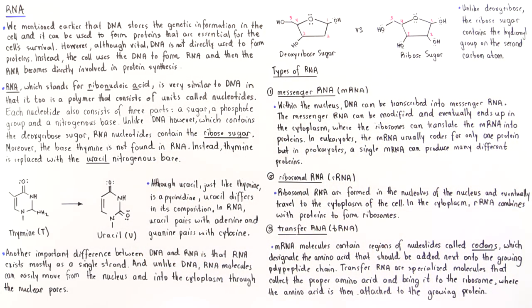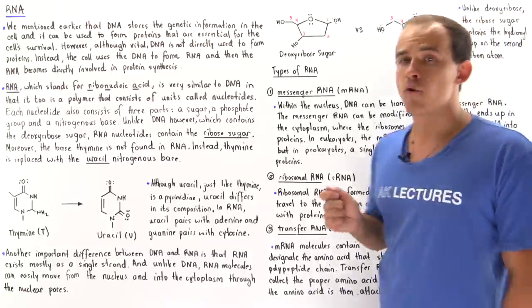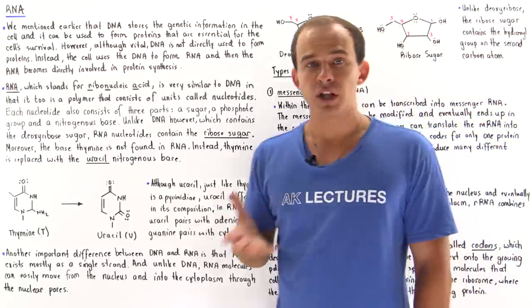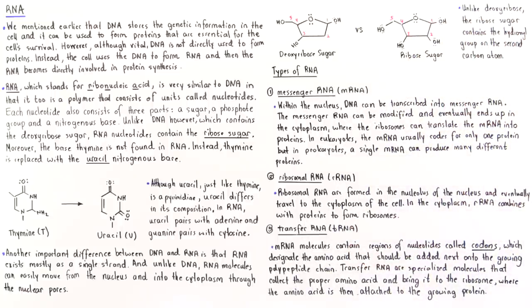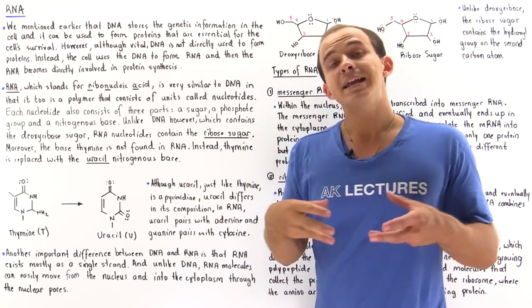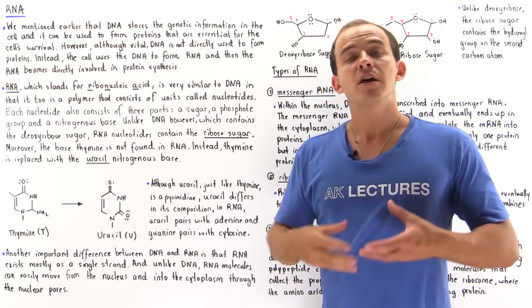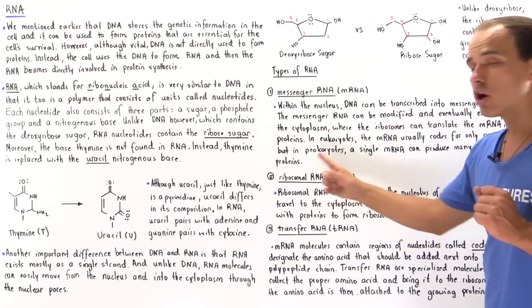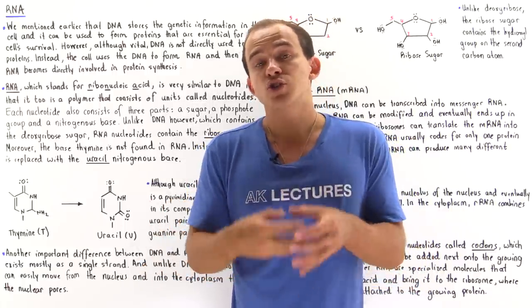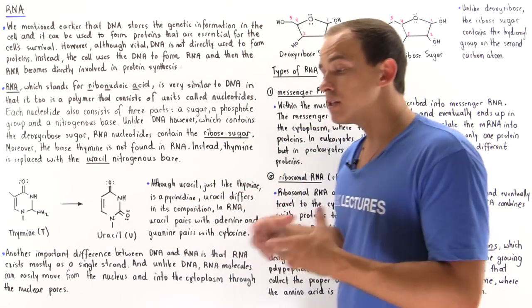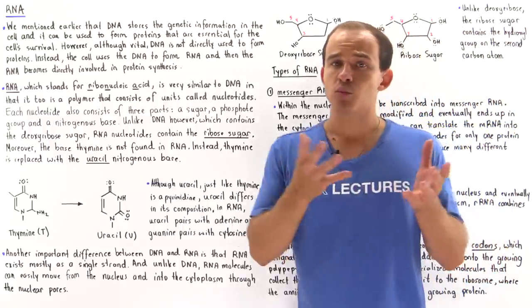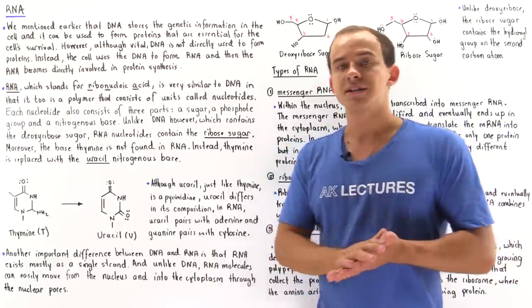The second type of RNA is rRNA, which stands for ribosomal RNA. Ribosomal RNA is synthesized in a specific section of the nucleus known as the nucleolus. Once synthesized from DNA, rRNA transfers into the cytoplasm where it combines with special proteins to form ribosomes. So ribosomal RNA molecules combine with proteins to form ribosomes — the machinery used to synthesize our proteins.